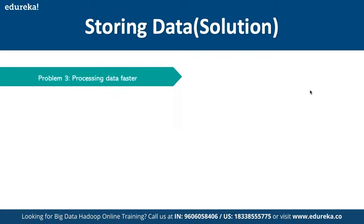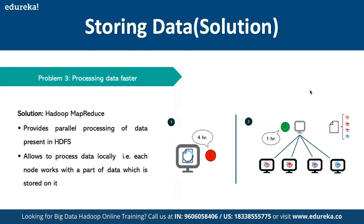The third problem — processing data faster — is solved by Hadoop MapReduce, which provides parallel processing of data stored in HDFS. Each node works with the portion of data stored on it. For example, if processing 1,000 pages is given to a single system, it might take four hours; but with four connected systems each handling 250 pages per hour, the same job takes just one hour. Like the classic math problem: if one worker builds a building in 30 days, three workers complete it faster. Work is divided among multiple workers for quicker output.